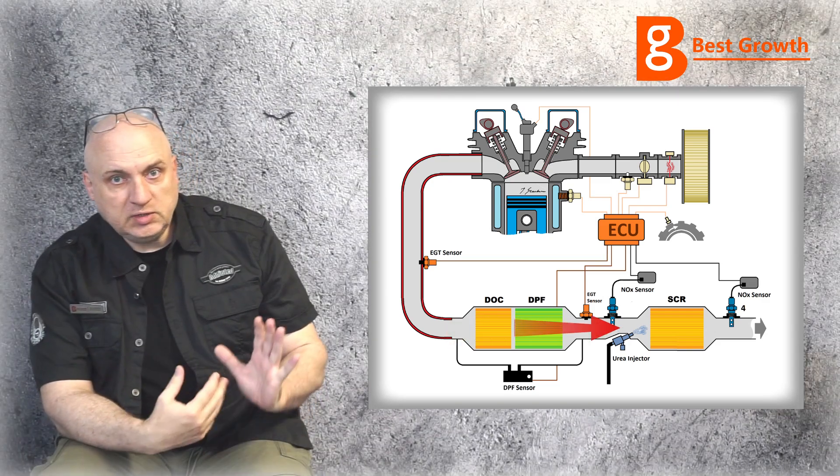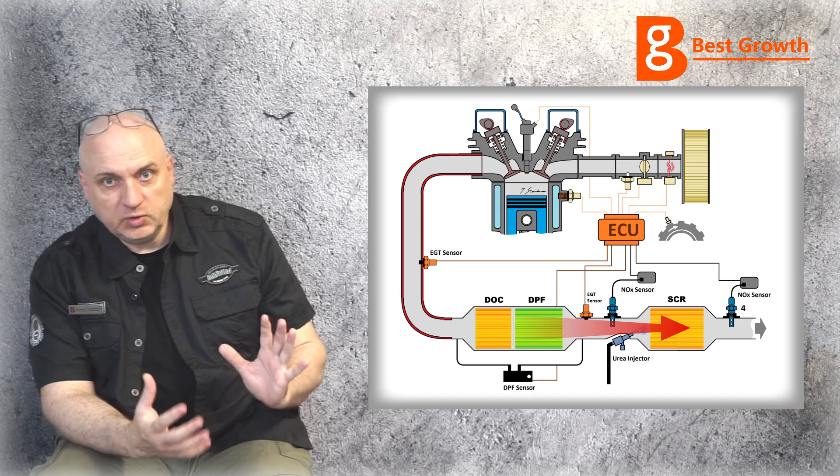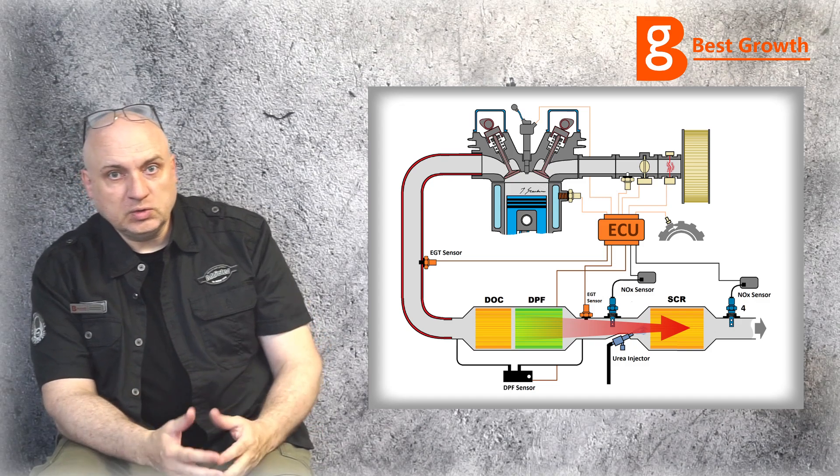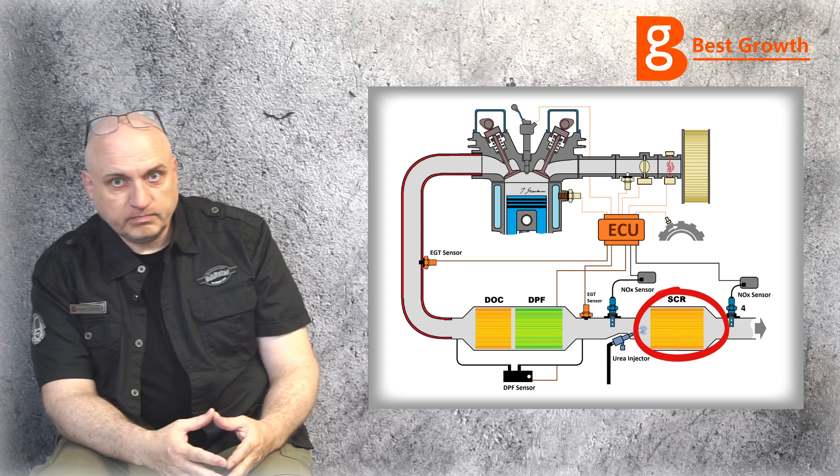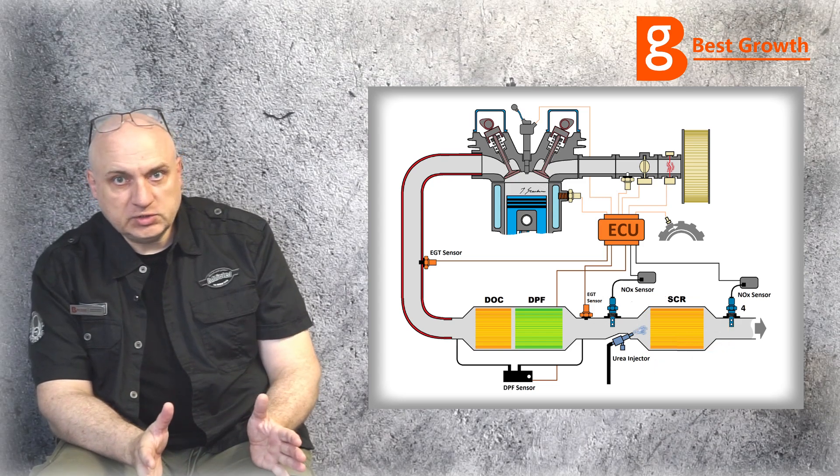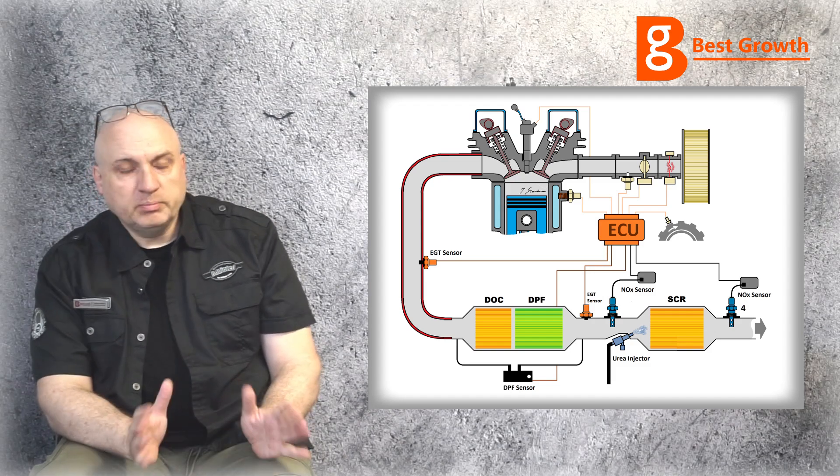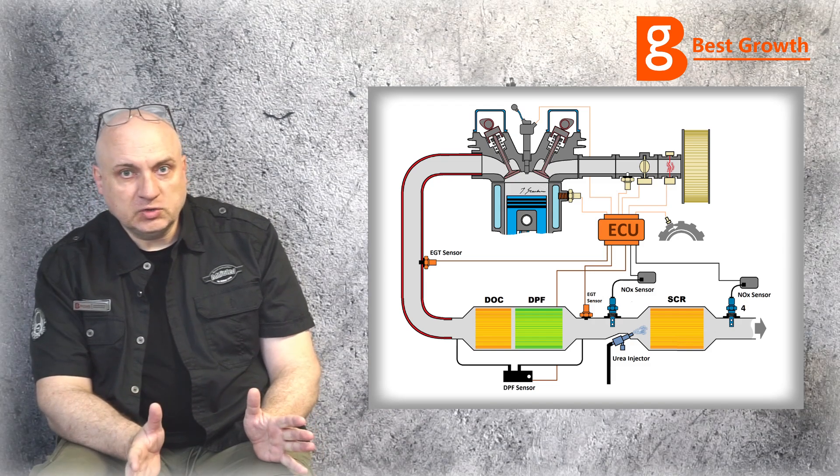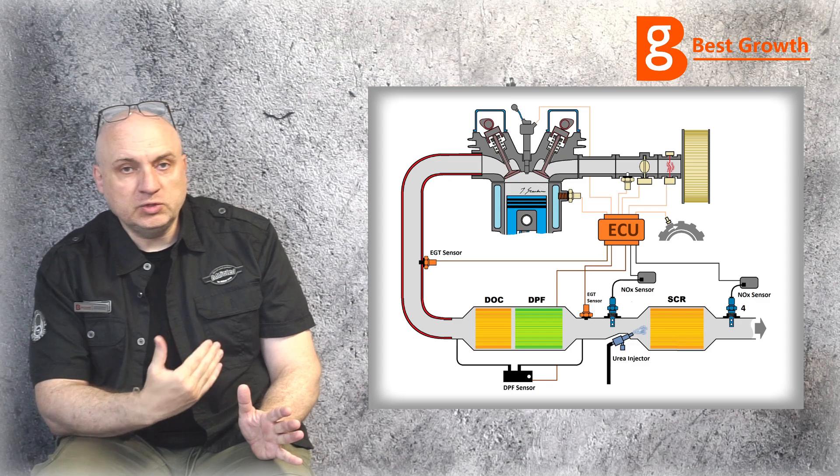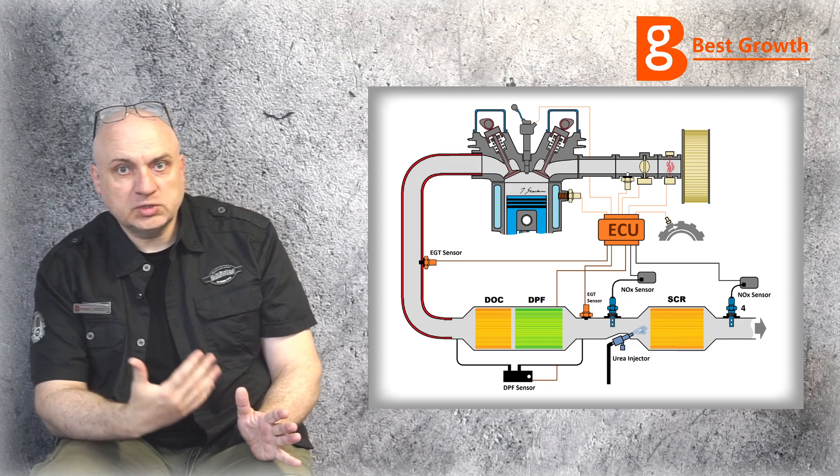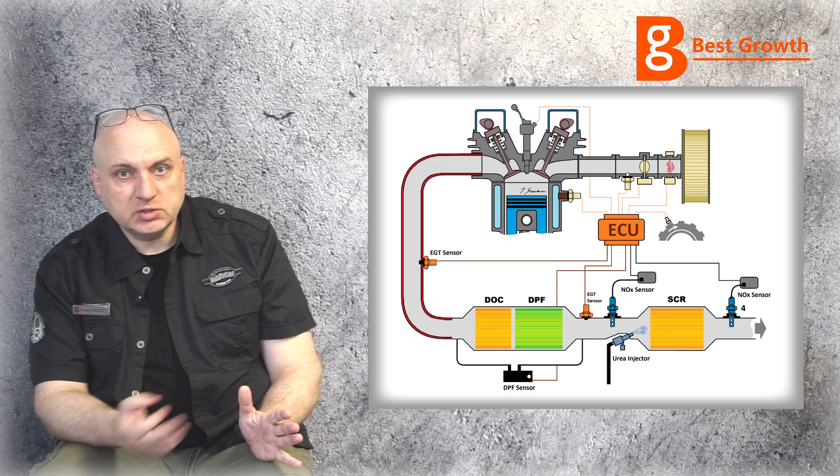Next, the exhaust gases leave the DOC DPF unit and go straight to SCR unit. The SCR abbreviation comes from selective catalyst reduction. Basically, the main function of the SCR is reducing the nitrogen oxides amount in the exhaust gases.